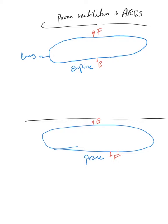Prone ventilation doesn't mean the patient will be in the prone position all the time. It's actually a cycle — there is a protocol where they put the patient in prone ventilation for, say, four hours, then flip for another six hours or two hours. There's a protocol where they switch the patient from prone to supine, to prone to supine.